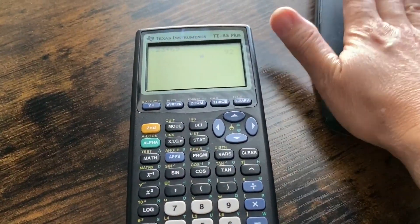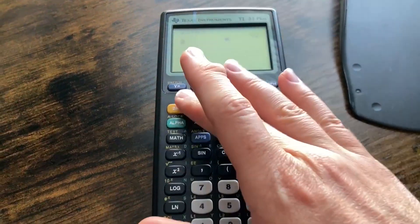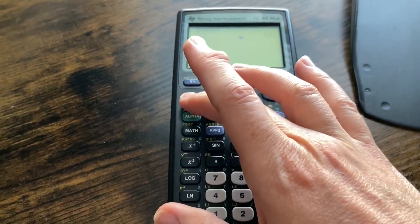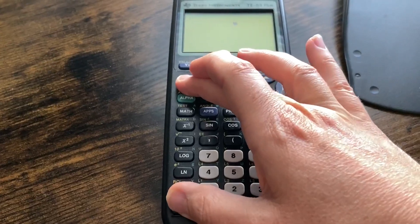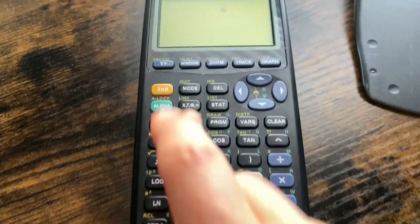To turn it off, make sure you don't just put it back into the case. You will need to do second up here and then the on button. So you see the off. Anytime you see the yellow stuff, you'll have to press the second button first.